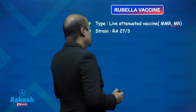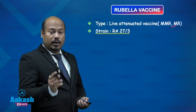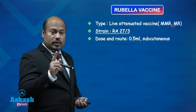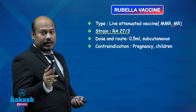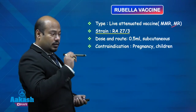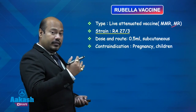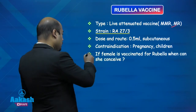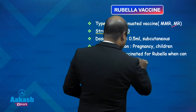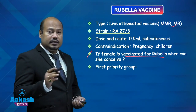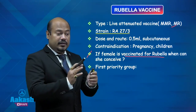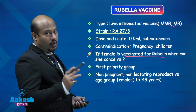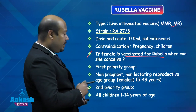The rubella vaccine is a live vaccine given as MMR or MR. The strain used is RA 27/3. It is given by the subcutaneous route. Contraindication is pregnancy, as rubella virus is highly teratogenic and pregnancy is already an immunosuppressed condition. If a female is vaccinated for rubella, she can conceive after a minimum gap of one month. The first priority group is non-pregnant, non-lactating reproductive-age females; the second priority group is all children aged 1 to 14 years.